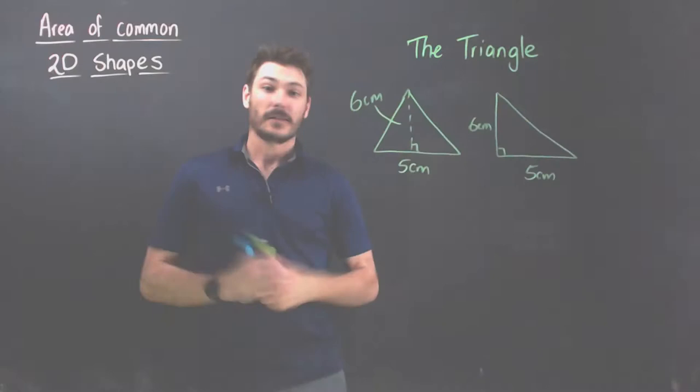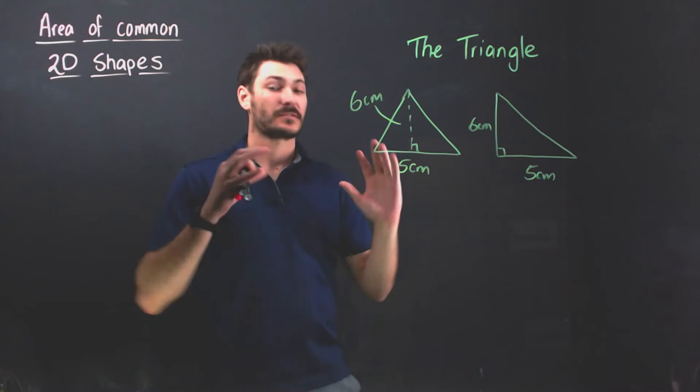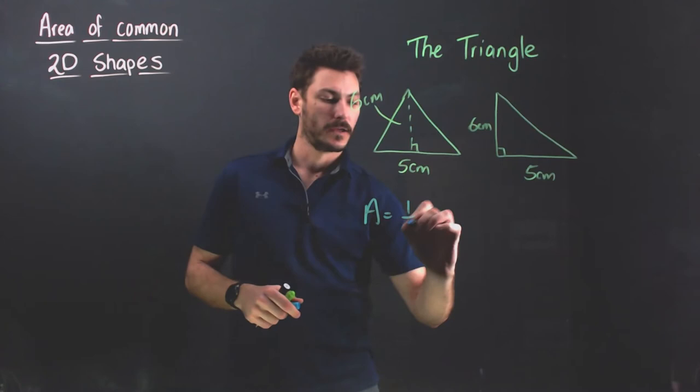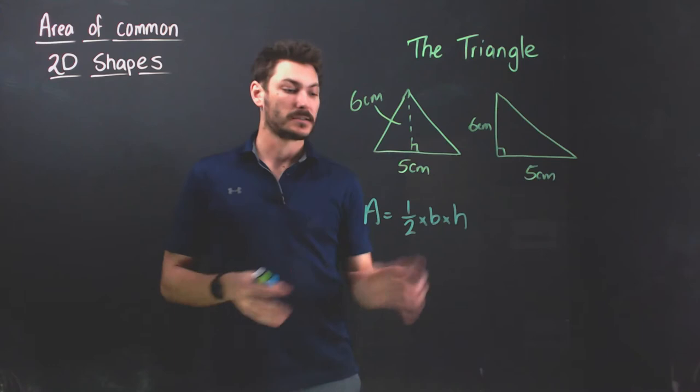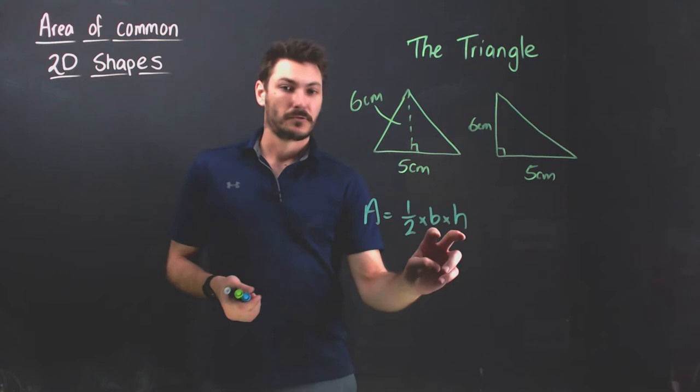The next shape is the triangle. The triangle in terms of its area calculation is defined by area equaling half times the base times the height. You may see this represented as base times height divided by two or any other manner of representation, but the point is it's one half or 0.5 times the base times the height. These two variables here, the base and the height, I'm going to quickly explain.